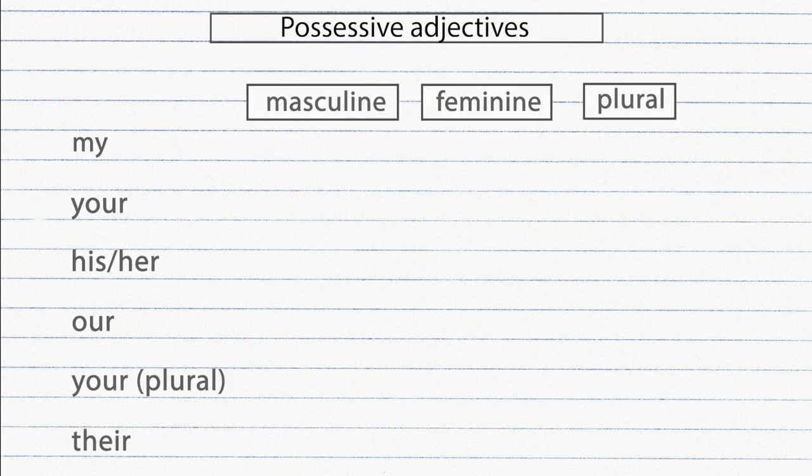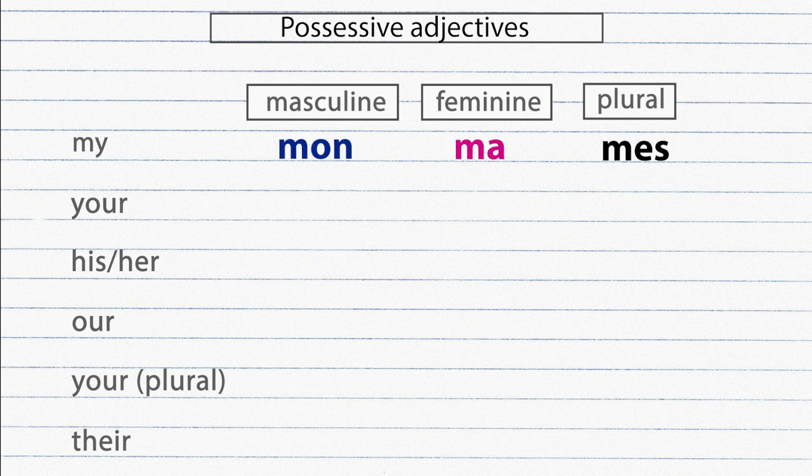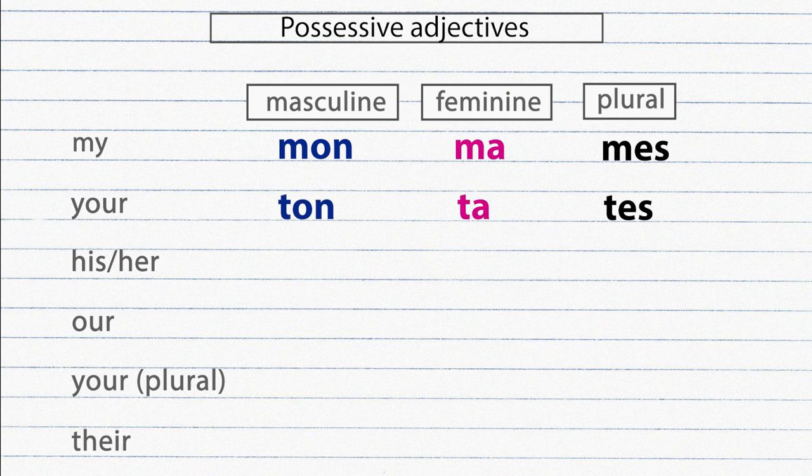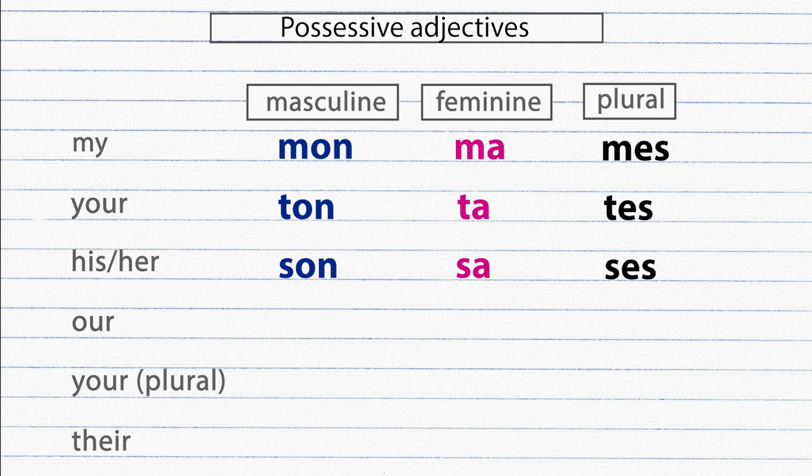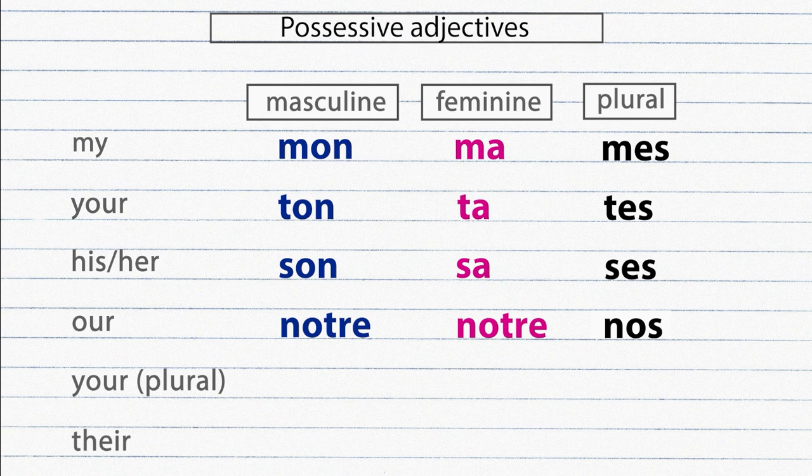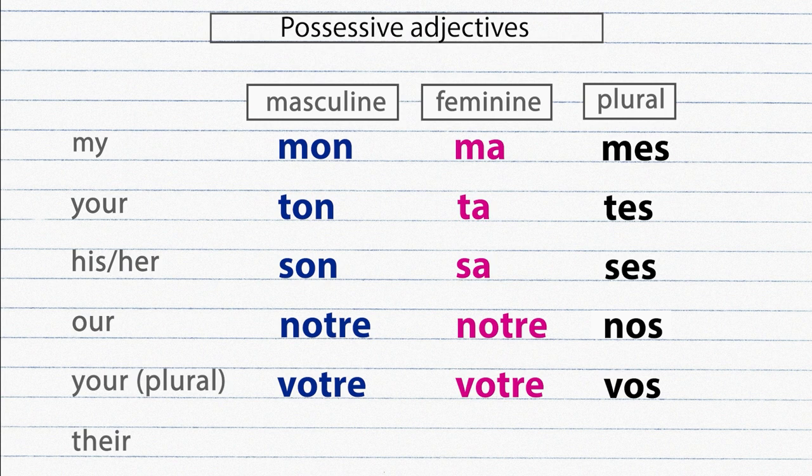And these are the possessive adjectives in French. Mon, ma, mes. Ton, ta, tes. Son, sa, ses. Notre, notre, nos. Votre, votre, vos. Leur, leur, leurs.